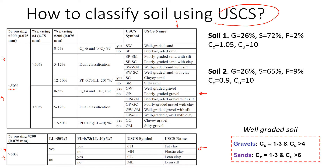Another key difference from other soil classification systems is the percentage passing sieve number four. Sieve number four gives the boundary between gravel and sand. If we have more gravel we use one part of the chart, and if we have more sand we use the other. The boundary is 4.75 millimeters, whereas in the Australian system the boundary is 2.36 millimeters — that difference is important to be aware of.